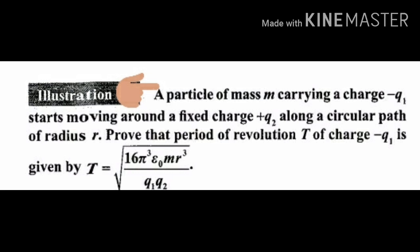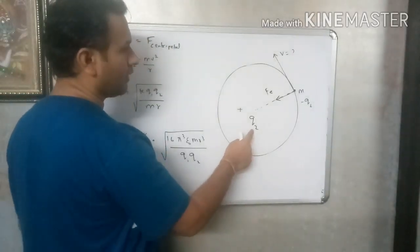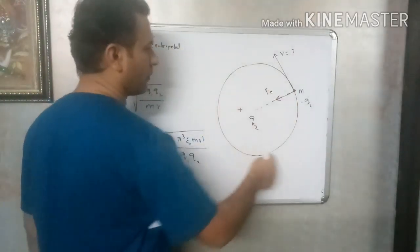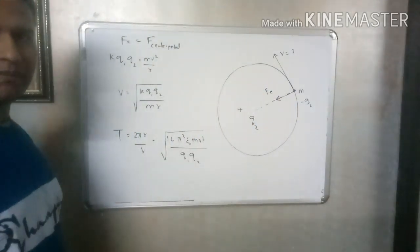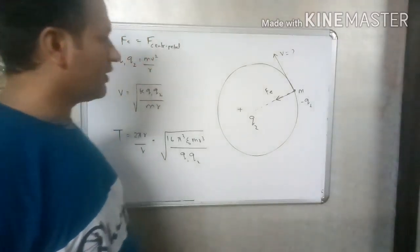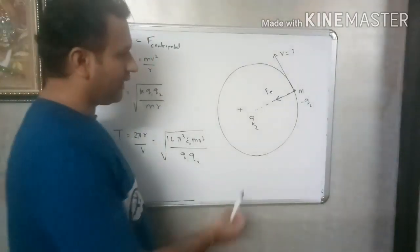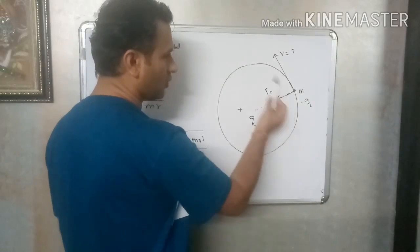Let us find out this time period. The charge is a fixed charge and the charge is a negative charge. We have to find the time period. Let us see step by step. First let us try to understand this charge is a positive charge, how does the circle move?